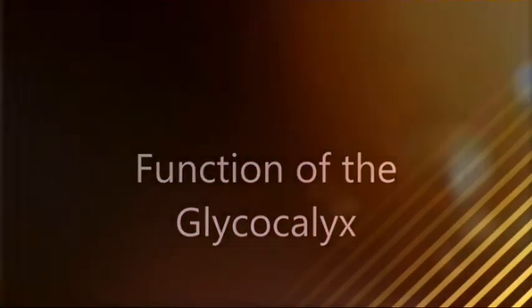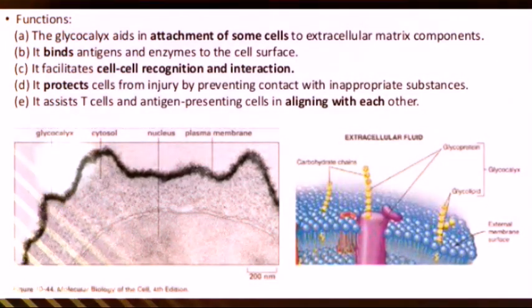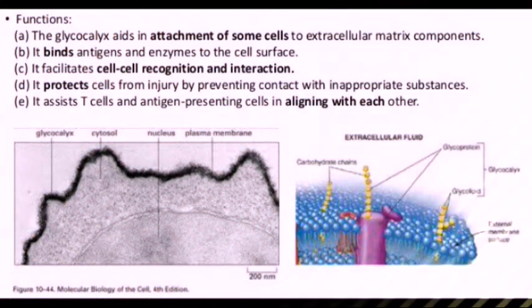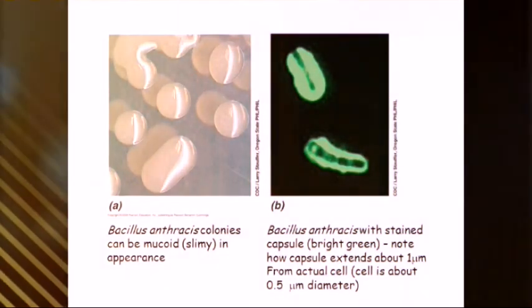The slime on the outside of a fish is an example of glycocalyx. The term was initially applied to the polysaccharide matrix coating epithelial cells, but its functions have been discovered to go well beyond that.